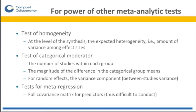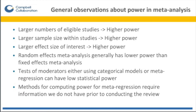Tests for meta-regression are more complicated. The power of tests for meta-regression requires the full covariance matrix for the predictors, making it very difficult to conduct power analysis for meta-regression prior to collecting the studies. In general, the larger the number of eligible studies in a meta-analysis, the higher the power for our meta-analytic tests.